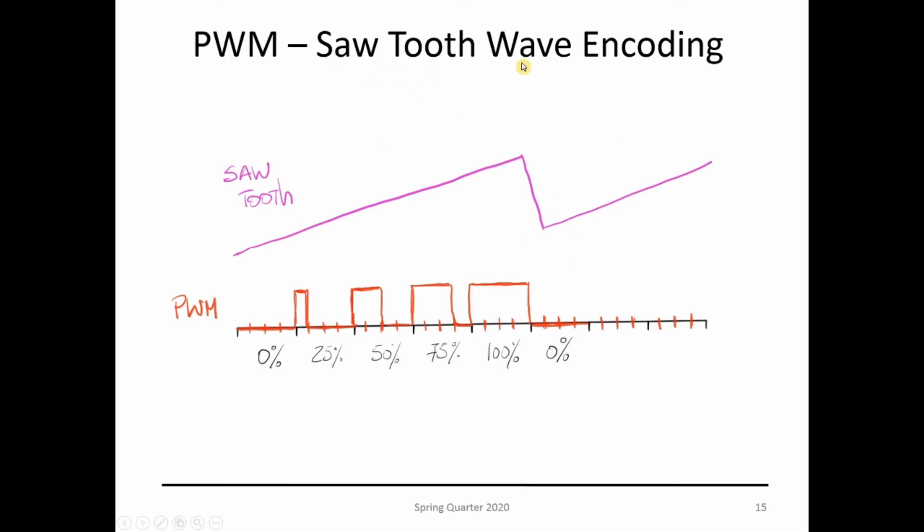Now, how do we do the sawtooth wave encoding? We encode slightly different. For the sawtooth what you do is you increment the PWM in steady increments. You don't change the amount of your PWM. It's just a constant increment amount. It's going to go up until it reaches 100% of your duty cycle and then you suddenly go to zero. That's how you do the cutoff of your sawtooth wave.